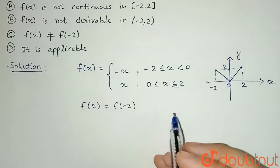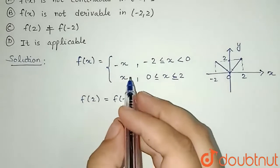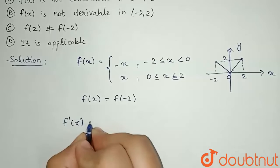So option A is not correct. Now, let's see for the option B in which we are talking about the derivative. That means f dash of x. Let's see f dash x.